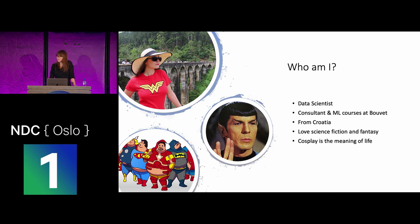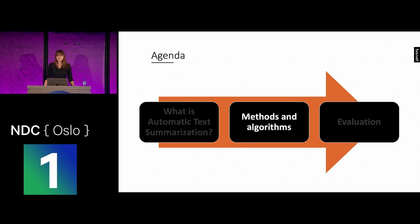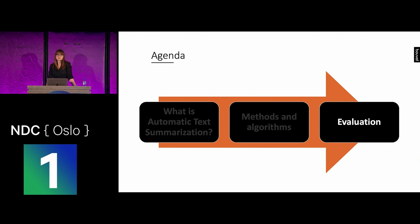Now let's talk about text summarization. Our agenda for today is: first, we're going to discuss what is automatic text summarization, why it is used, and what are the different types. Then we will discuss some methods and algorithms that are used today and were used in the past to summarize text automatically. And in the end, we are going to discuss some of the evaluation methods — how to know if our summaries are good enough.